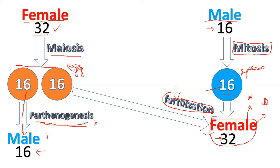These males are generally called drones. So I hope you understand how males and females differ as far as the number of chromosomes is concerned. But our million-dollar question remains unanswered: why do males not have sons but have grandsons, and have grandfathers but not fathers?